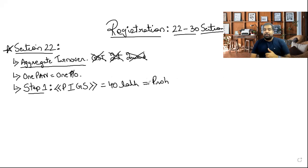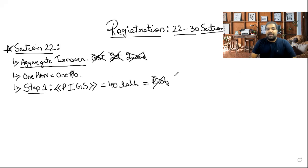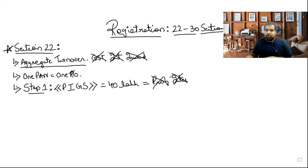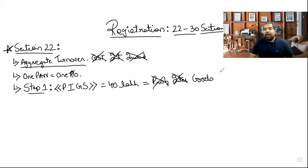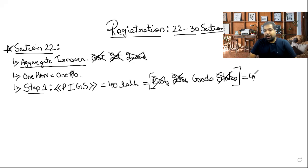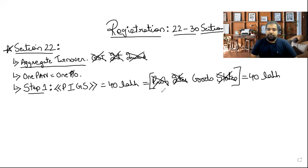What is PIGS? P — you should not be dealing in Prohibited goods (aerated water, ice cream, pan masala, tobacco and tobacco products). I — you should not be doing Interstate supply (one state to another). G — you should only be selling Goods, not even one percent services. S — you should not be in certain States. If all these conditions are met, your limit is 40 lakhs.